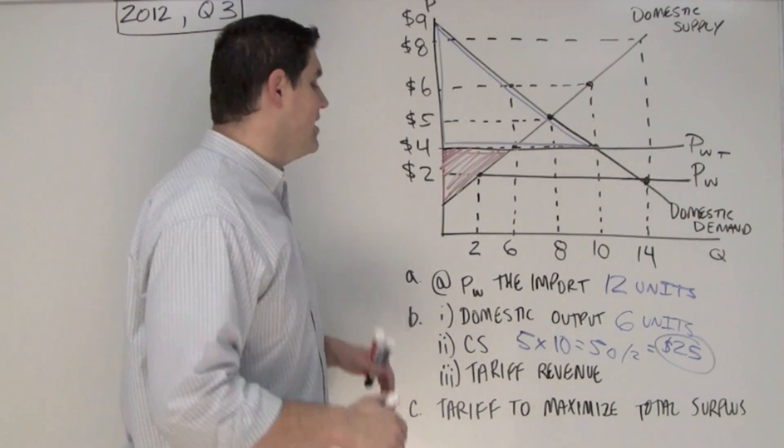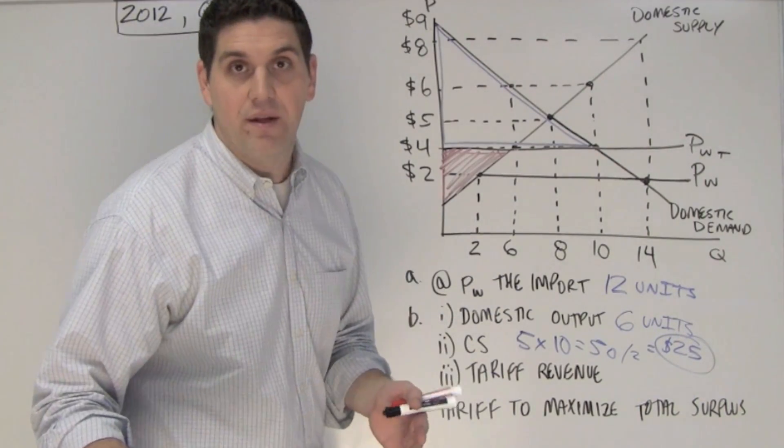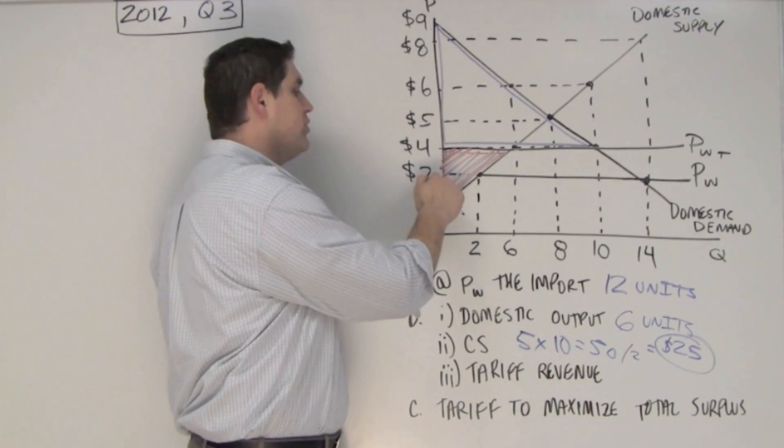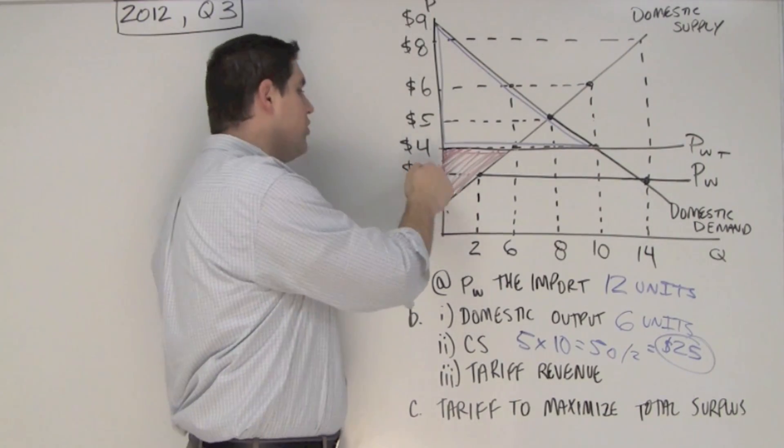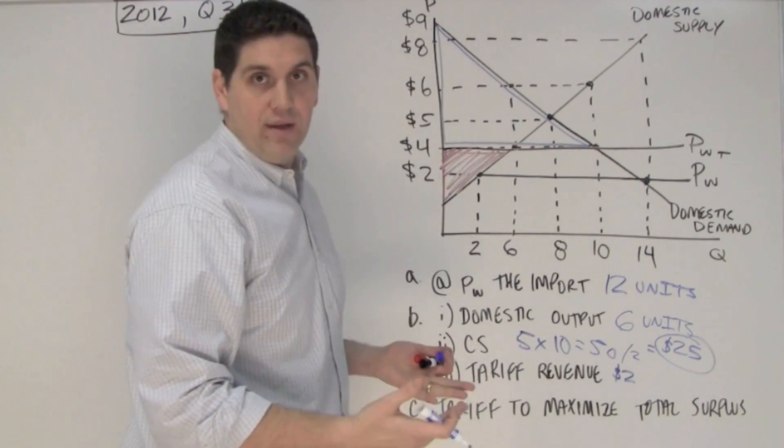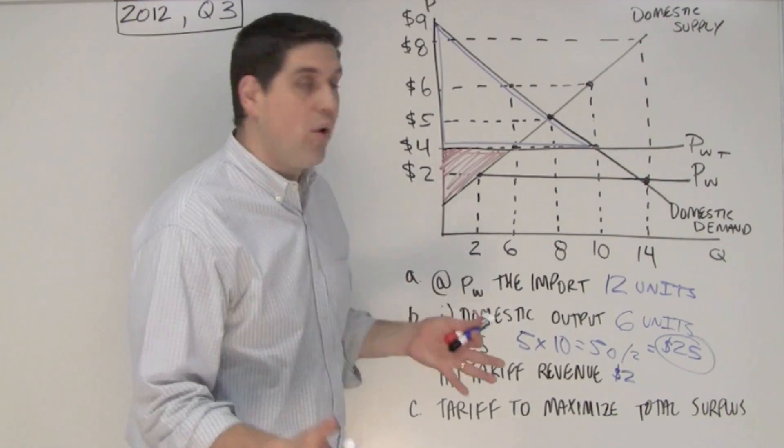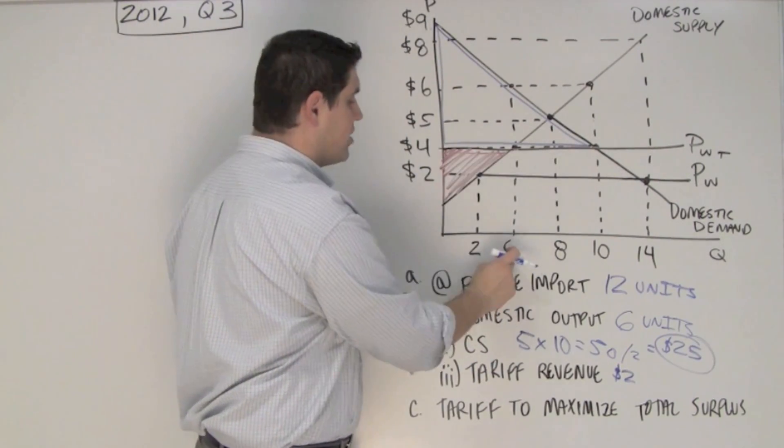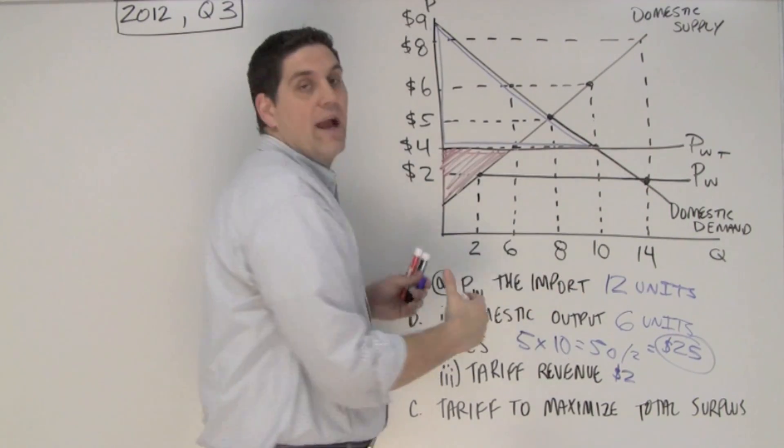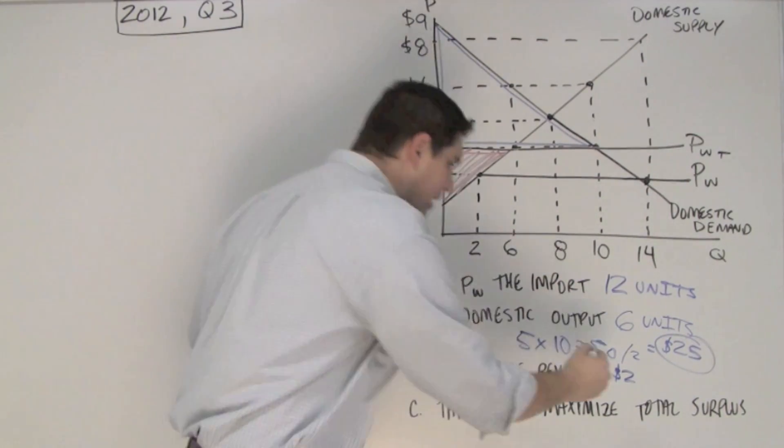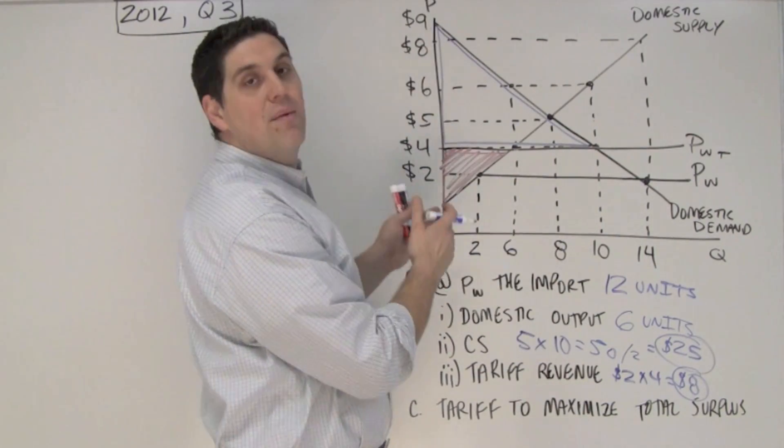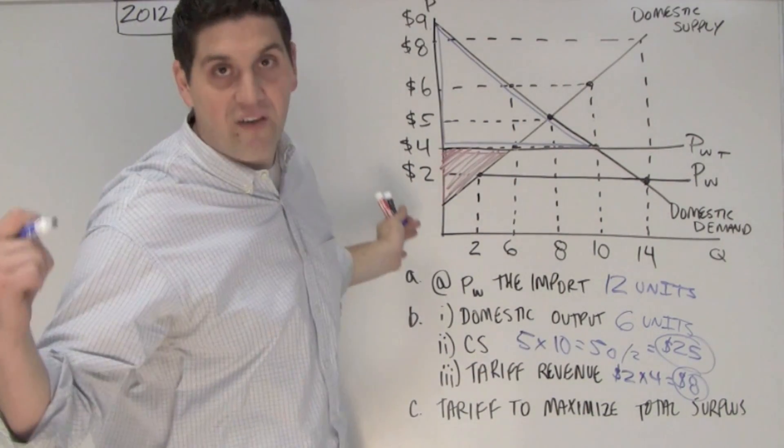How about B3? Where is the tariff revenue and how much is it? The first question is how much is the tariff per unit? Well, the world price was 2, and now they're saying at the tariff the new world price is 4, and so it must be a tariff of $2 per unit. The next question is how many units were imported. Well, at $4, domestic production was 6. Consumers wanted 10, so there were 4 units that were actually imported from other countries. And so that $2 times 4 gives you $8. That's the right answer. That's how much the tariff is that goes to the government.